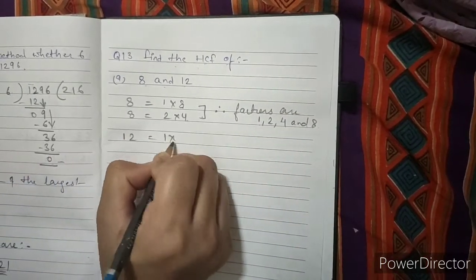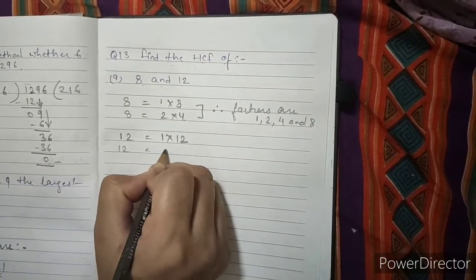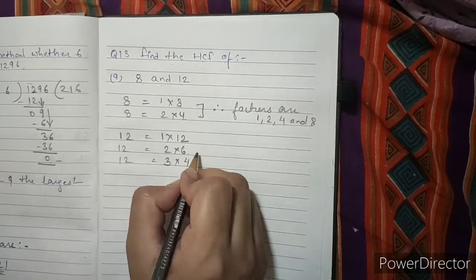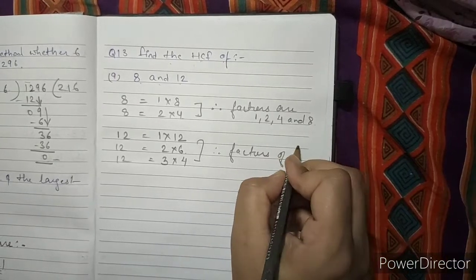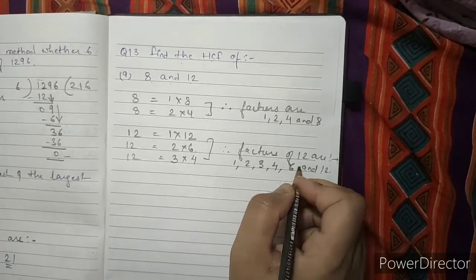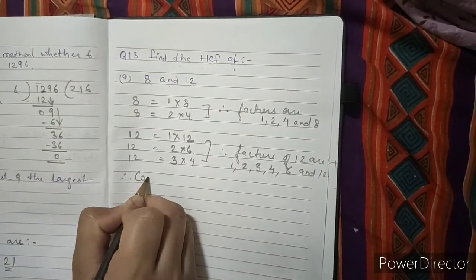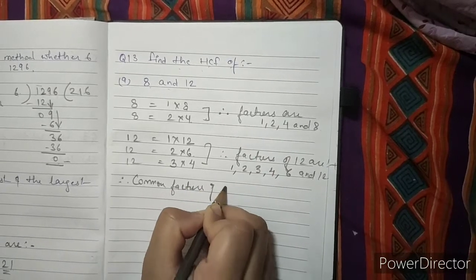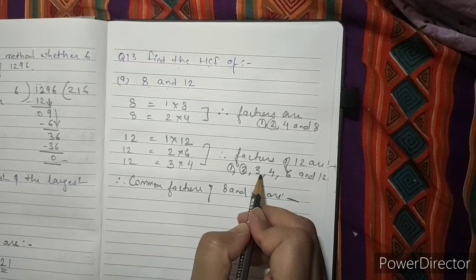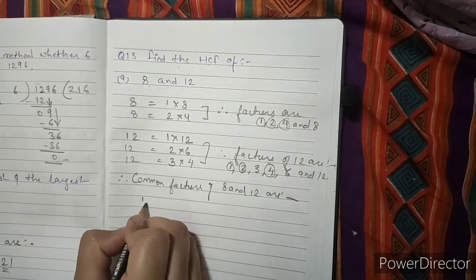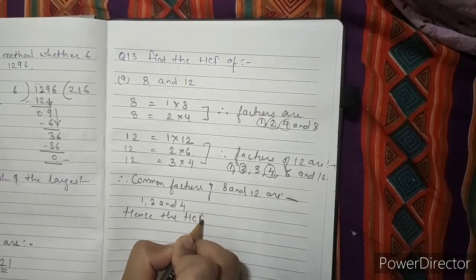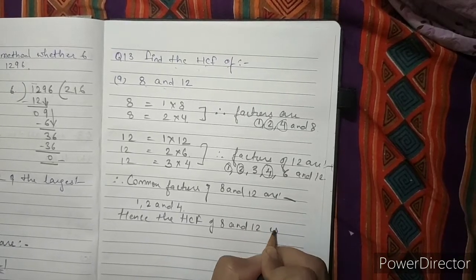Factors of 12: 1 times 12, 2 sixes are 12, 3 fours are 12. Therefore, factors of 12 are 1, 2, 3, 4, 6 and 12. So common factors of 8 and 12 are 1, 2 and 4. Hence, the highest common factor of 8 and 12 is 4.